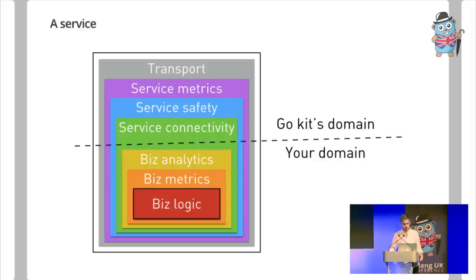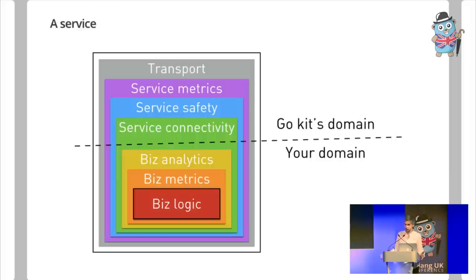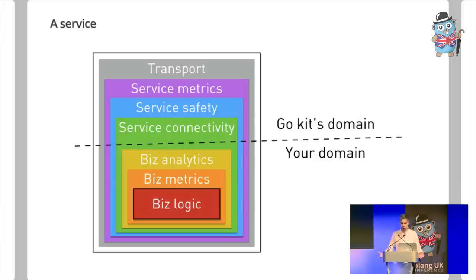Wrapping the business logic is a safety layer — if one instance goes down, how do you deal with that? There are correct and incorrect answers. Then there's service-level metrics: how many active connections do I have right now? That's important for operations people even if your business logic doesn't care. And beyond that is the transport — how do you actually talk from one thing to another. GoKit focuses on point-to-point RPC. Even within that, you can do JSON over HTTP, gRPC, net/RPC, Avro, Thrift. GoKit aims to support all of these.